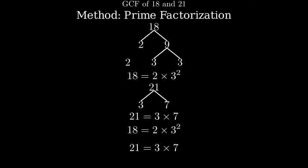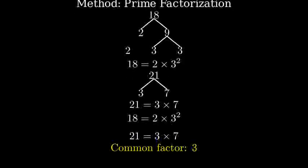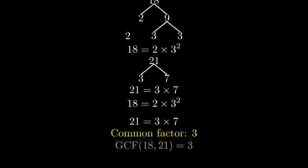Now let's compare the prime factors of both numbers. 18 has the prime factors 2 and 3 squared. 21 has the prime factors 3 and 7. Looking at these, we can see that 3 is the only prime factor that appears in both numbers. Therefore, the greatest common factor of 18 and 21 is 3.